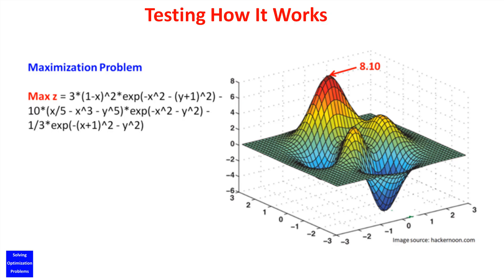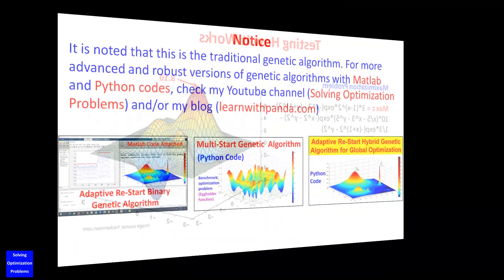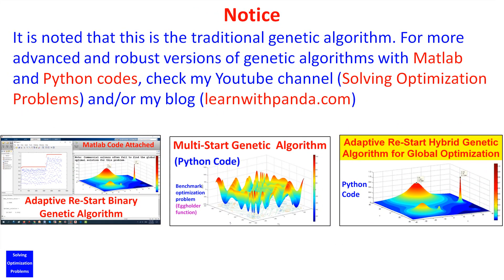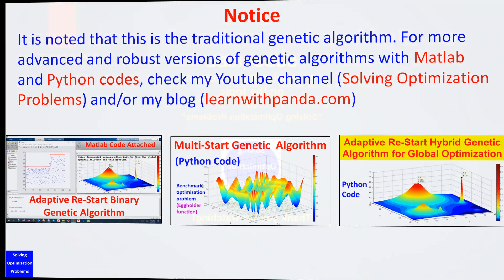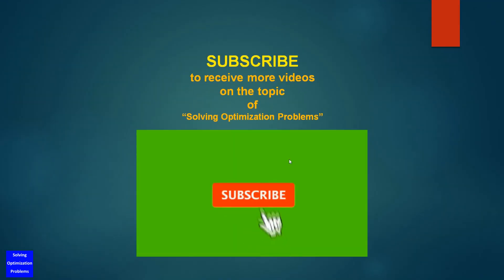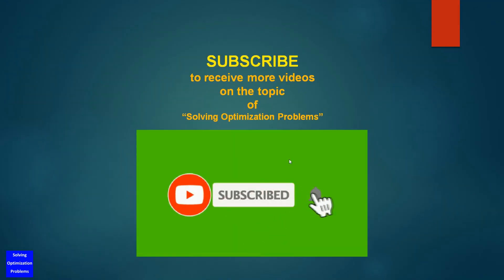Here are details of the test function. It is noted that this is the traditional genetic algorithm. For more advanced and robust versions of genetic algorithms with MATLAB and Python codes, check my YouTube channel, Solving Optimization Problems, and my blog, LearnWithPanda.com. If you like my channel, don't forget to hit the subscribe button to receive more videos on solving optimization problems every week. Now let's get started.